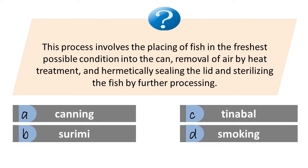This process involves the placing of fish in the freshest possible condition into the can, removal of air by heat treatment, and hermetically sealing the lid and sterilizing the fish by further processing. A) canning, B) brining, C) tinning, D) smoking. The answer is canning.